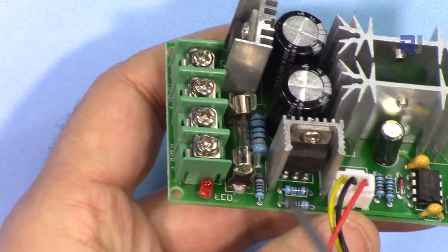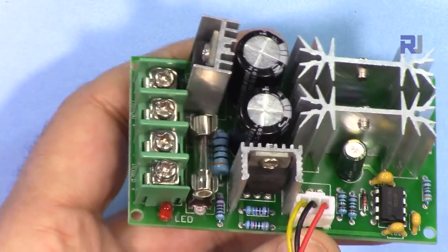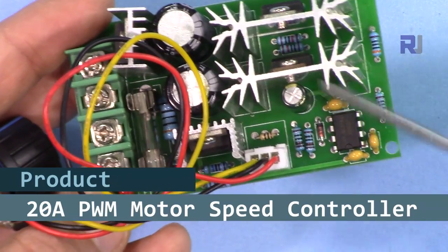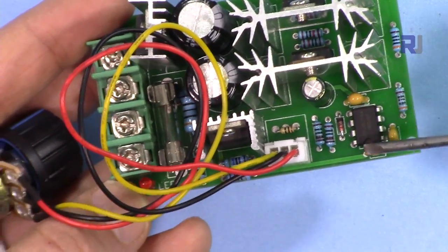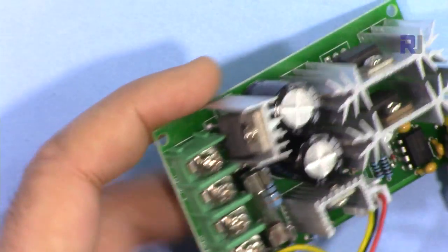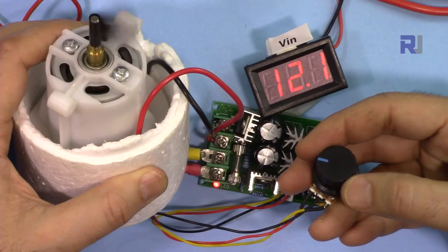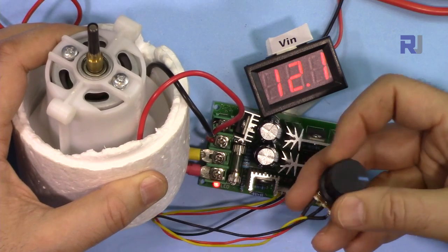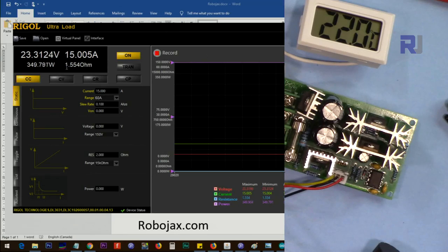Hi, welcome to a product review by Robojax. In this video we are going to test the universal DC 10 to 60 volts 20 ampere pulse width modulation motor speed regulator. We are going to test it by connecting it to a motor to see how the motor responds and also test if it really can handle 20 ampere of motor or load. Let's get started.